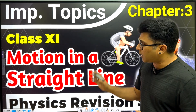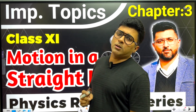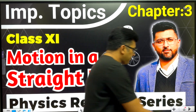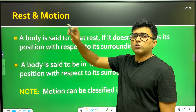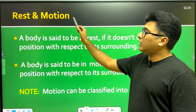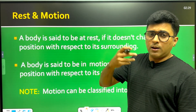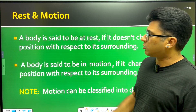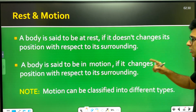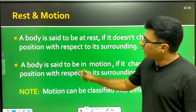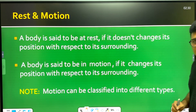This video covers our chapter on motion in a straight line. There is a very important topic we are going to discuss. First, we look at rest and motion. A body is said to be at rest if it does not change its position with respect to its surroundings. A body is said to be in motion if it changes its position with respect to its surroundings.